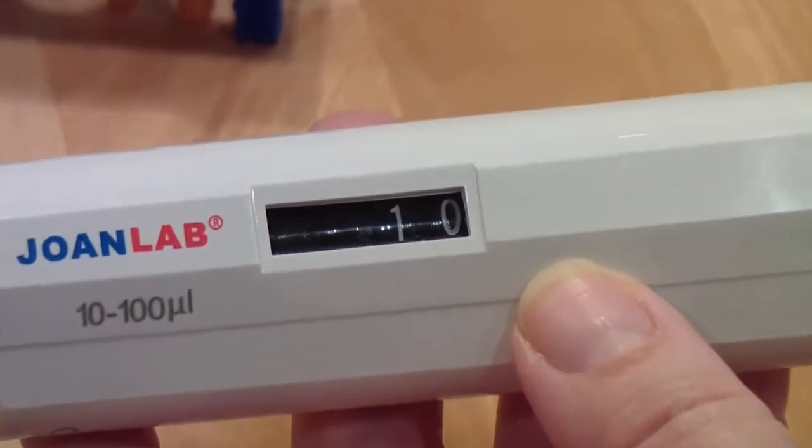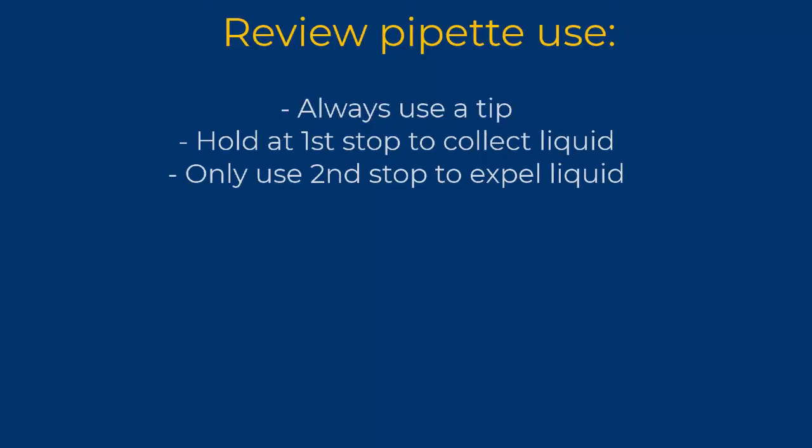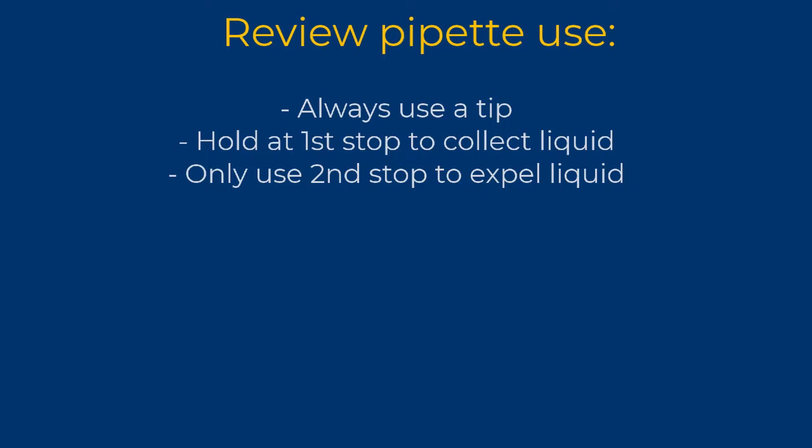Set the pipetter to ten microliters. Be sure to stay at the first stop. Remember, only go to the second stop when you are trying to eject all of the liquid and leave the tube at the end. Notice how, when you have such a small volume, the first stop is a very tiny movement.